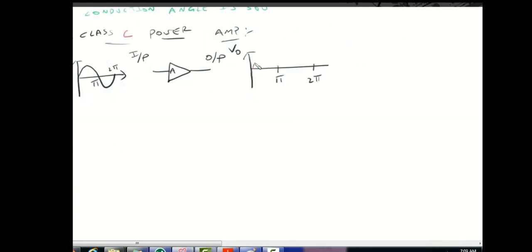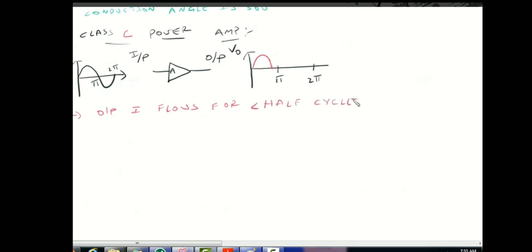Next is the Class C power amplifier. Here the output current flows for less than half cycle of the input. The conduction angle is less than 180 degrees for the Class C power amplifier.